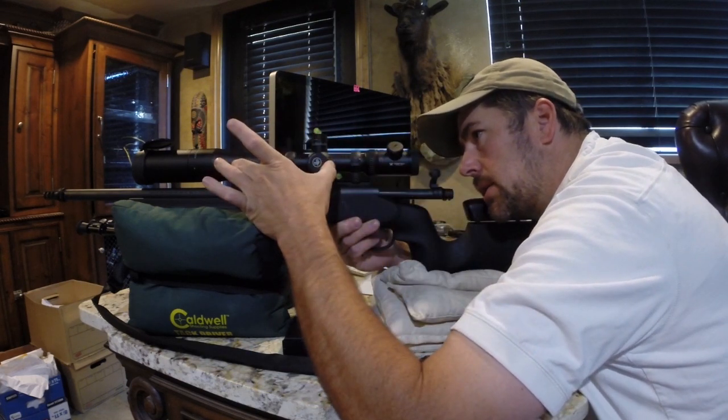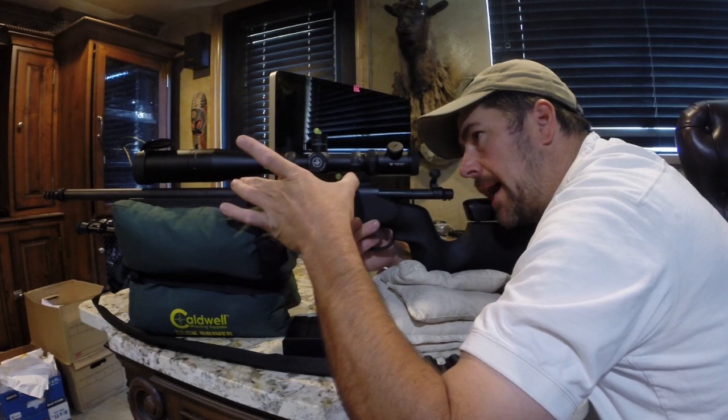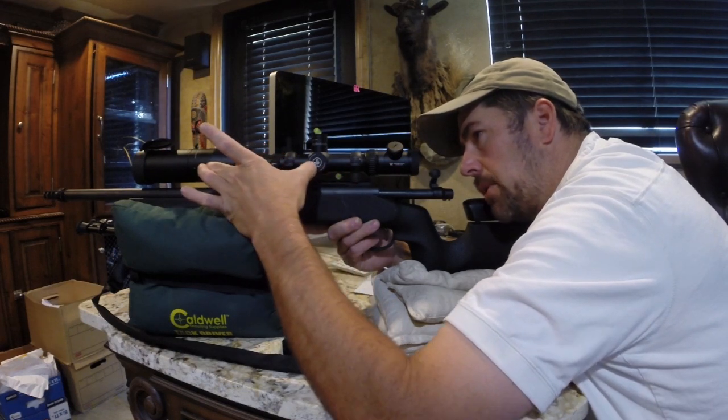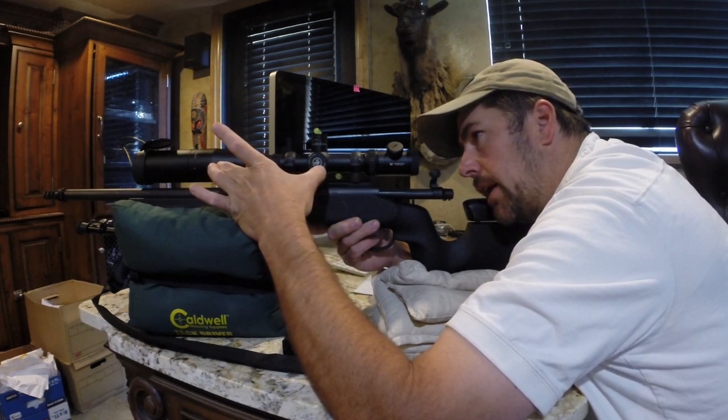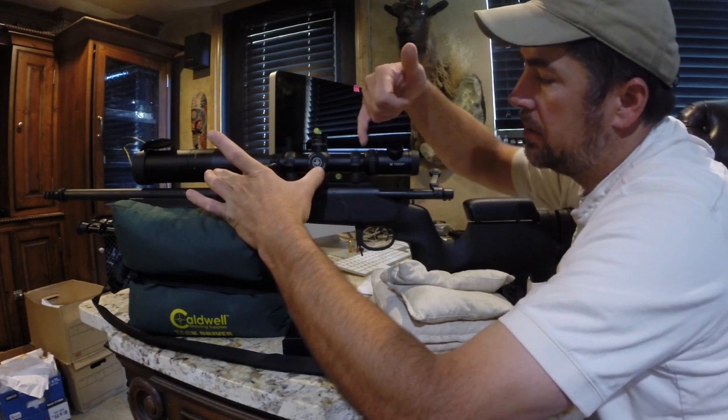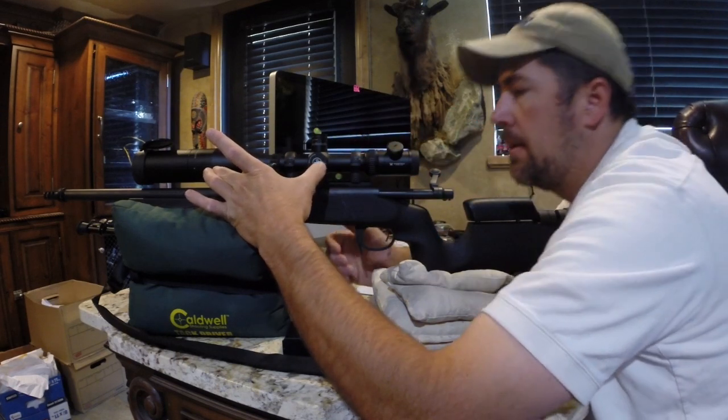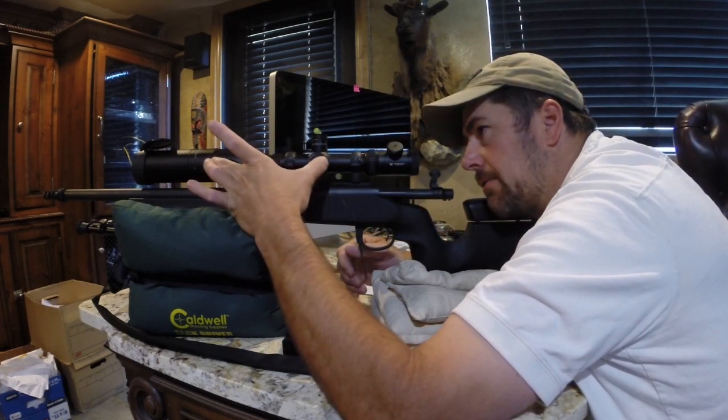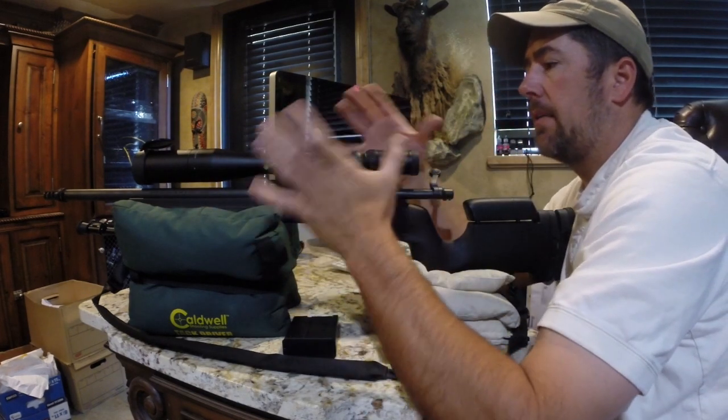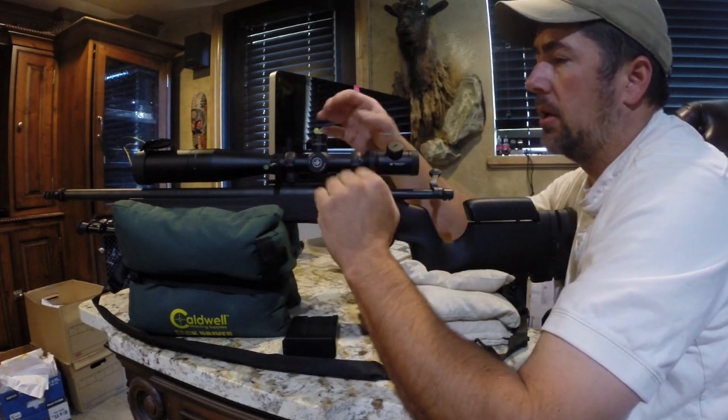What you want to do is actually slide the scope forward and back, and find that midpoint of the perfect eye relief. What I like to do is use a pencil and make a little mark, and I'll go back and forth until I find that. Once you've got that all set, you're leveled, you're locked down.